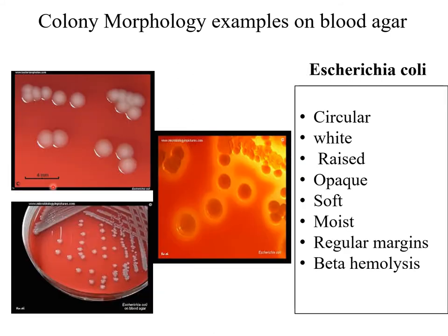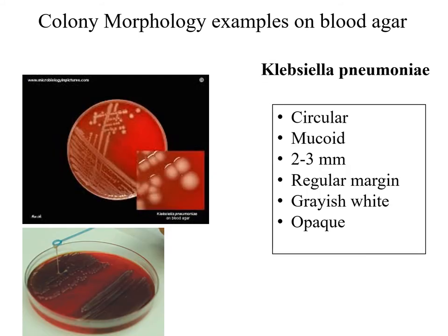This represents Escherichia coli. The colonies are circular and white in color. They are raised, opaque, soft, and moist, with regular margins. They are characterized by being beta-hemolytic on blood agar.